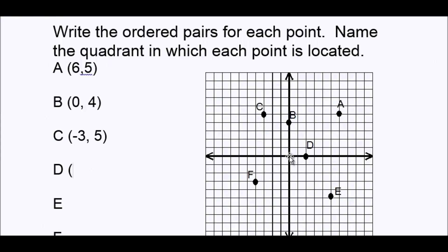So for D, we start at the origin. We went right two spots — that's two, which is positive. But we didn't go up or down, which means your y is zero. So look at point B and point D: they both lie on the number lines. One lies on the y-axis and the other lies on the x-axis. When that happens, you will have one coordinate that will be zero.